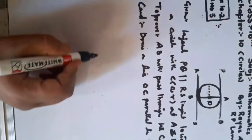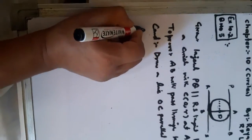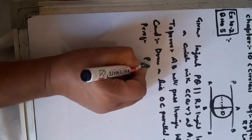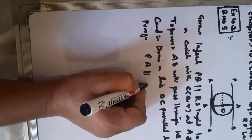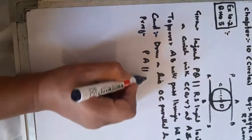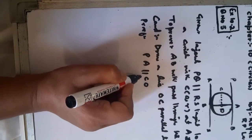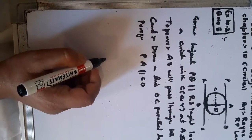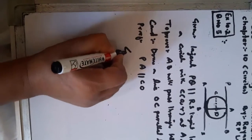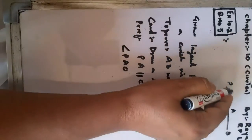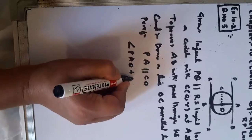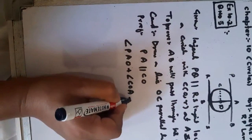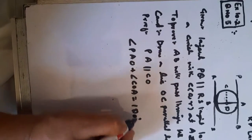Since PA is parallel to OC, if we apply the co-interior angles property, then angle PAO plus angle COA will be equal to 180 degrees.